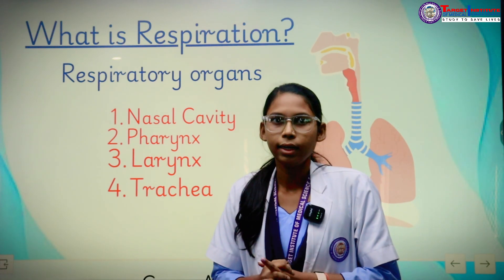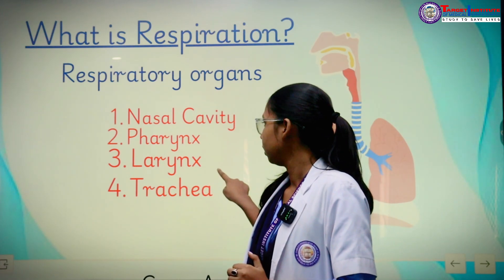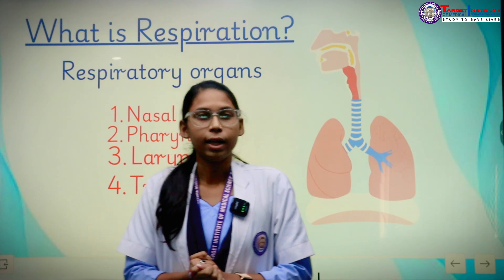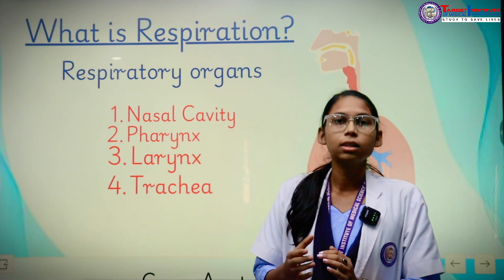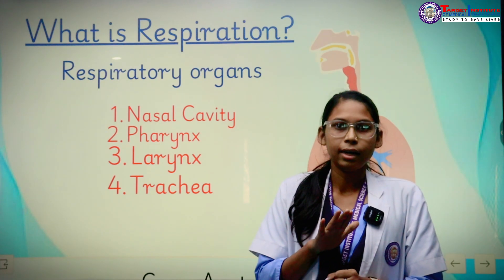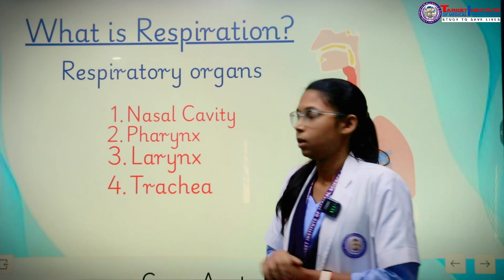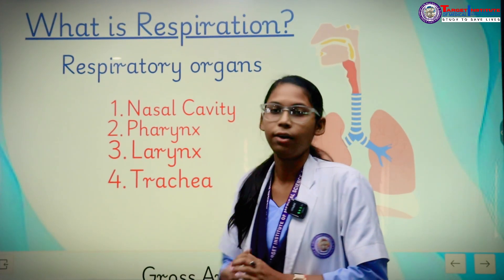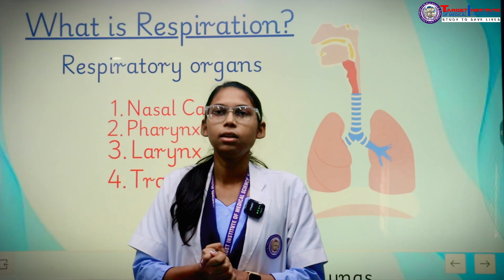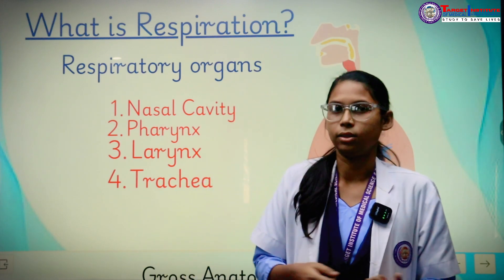The larynx works as a protector of the lower respiratory organs. The larynx has a flap-like structure which covers the opening of the larynx, and this protects so that whenever we swallow any food, it does not go into the windpipe. Then the trachea — the trachea is also known as the windpipe, and it takes the air and sends it to the bronchioles and the lungs.